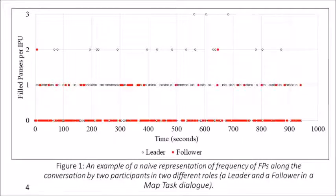Here we show a naive representation of the frequencies of filled pauses over the course of a single conversation in our corpus. The y-axis represents filled pauses occurrences per interpausal unit from 0 to 3 in a single utterance, and the x-axis represents the conversation time. This representation shows a dominance in the use of filled pauses of one speaker, annotated as the leader in black circles, compared to the other speaker, the follower, in red squares.